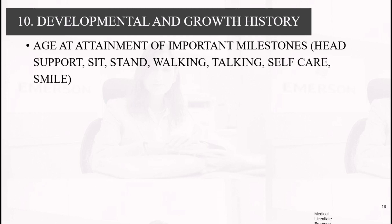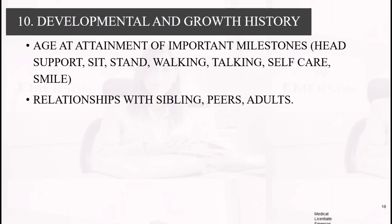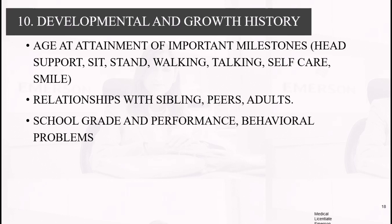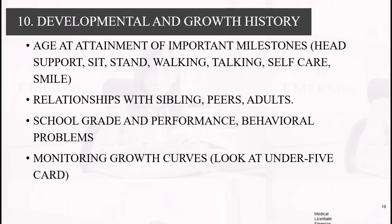D is for Development and growth. Ask about the age at attainment of important milestones — age of head support, sitting, standing, walking, talking, self-care, and first smile. You need to read your developmental milestones to know when children are expected to achieve these, so you can identify failure to thrive or delayed milestones. Also ask about relations with siblings, peers, and adults, school grade and performance, and behavioral problems. Review the under-five card growth curve.